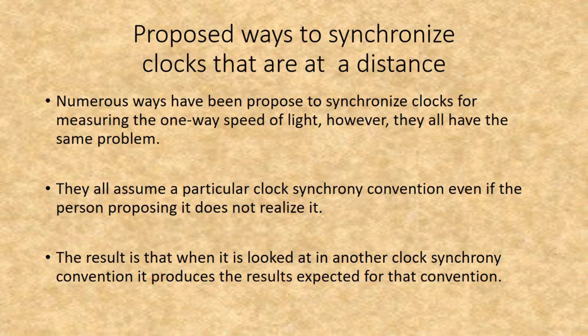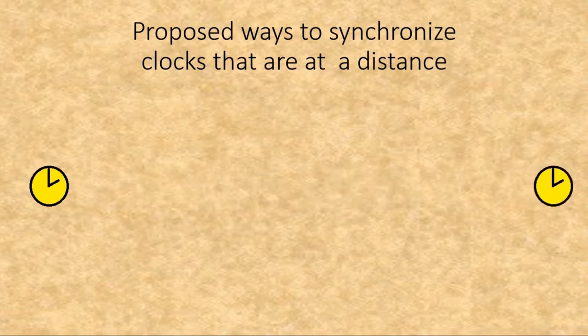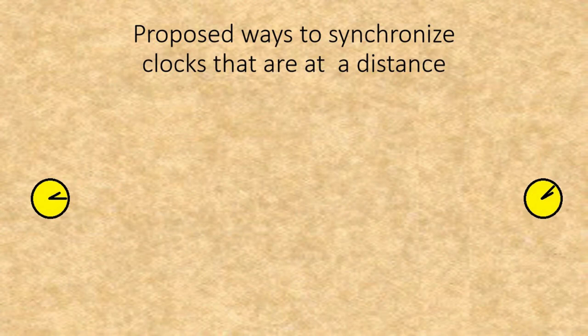Numerous ways have been proposed to synchronize clocks for measuring the one-way speed of light, but they all have the same problem — they all assume a particular clock synchrony convention, even if the person proposing it does not realize it. The most common proposal is to start with two clocks right next to each other so they can be synchronized, then move one out to a distance where it can be used to measure the one-way speed of light. The problem is that moving one of the clocks causes time dilation according to special relativity, throwing the clocks out of sync.